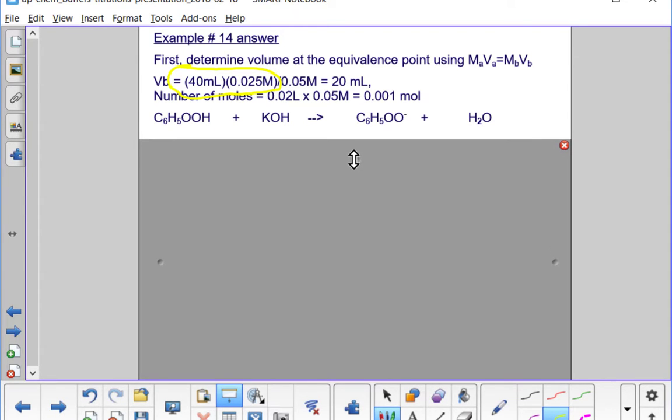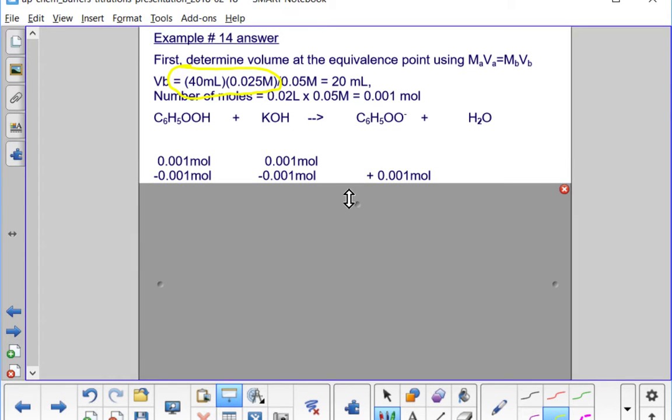So let's set up our neutralization: benzoic acid plus KOH produces this conjugate base and water. We start with 0.001 moles of acid and base. We're at the equivalence point, they should be equal. They both get used up in the neutralization, and in doing so we generate C6H5OO minus. That's how many moles we have after the neutralization.